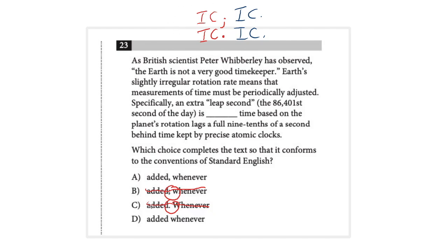And so again, when you see them both, they're both going to be incorrect, and that can be a big, big help — because usually, once you've gotten rid of those two, it's not going to be too hard to decide between the remaining two options.